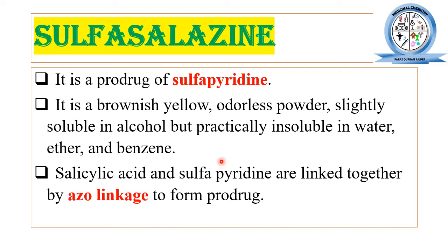Sulfasalazine is one of the products of sulfonamide. Basically, it is a product of sulfapyridine — an N1-substituted sulfonamide derivative in which the N1 site is substituted with a pyridine heterocyclic ring. As far as its physical properties are concerned, it acts as a brownish-yellow, odorless powder that is slightly soluble in alcohol.